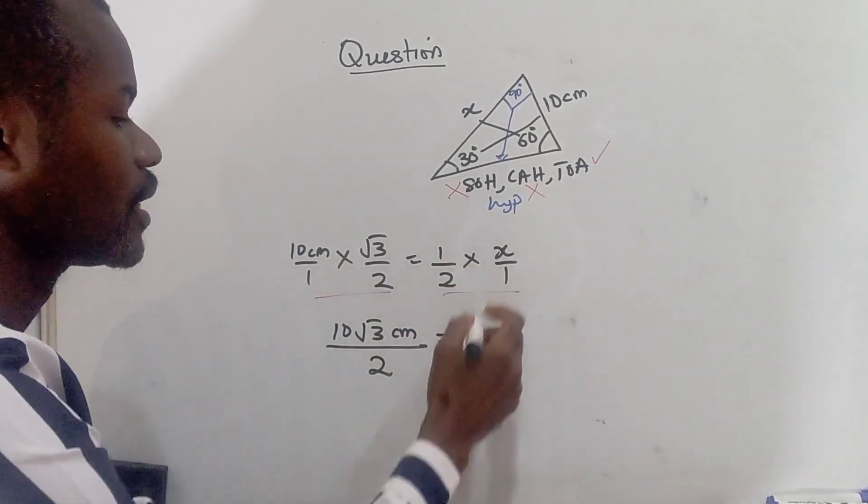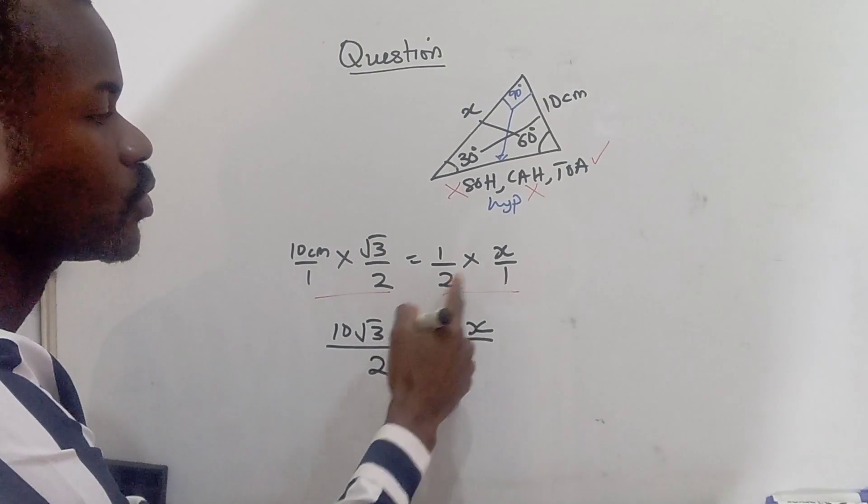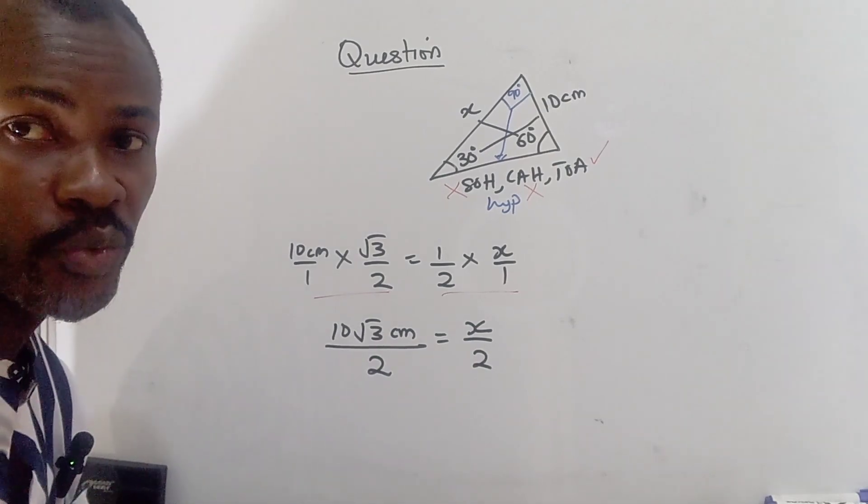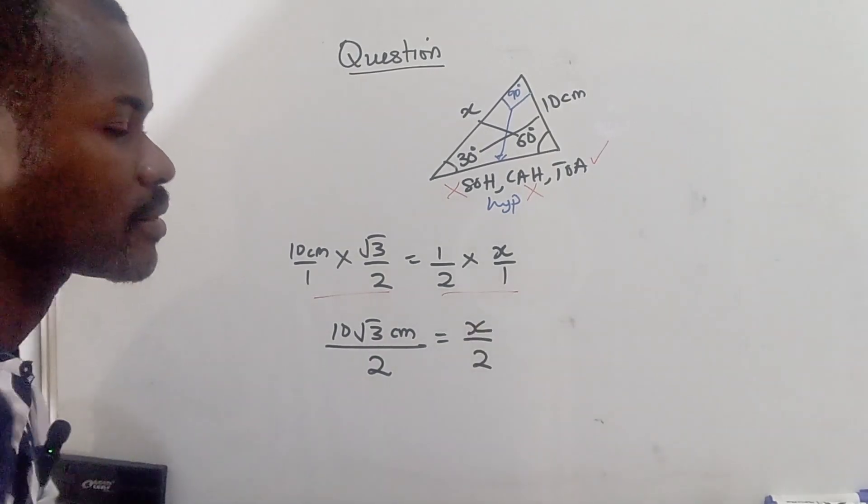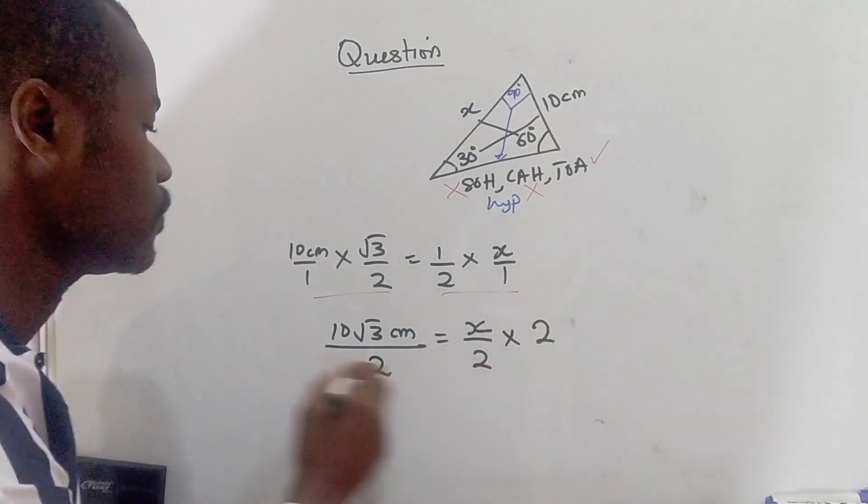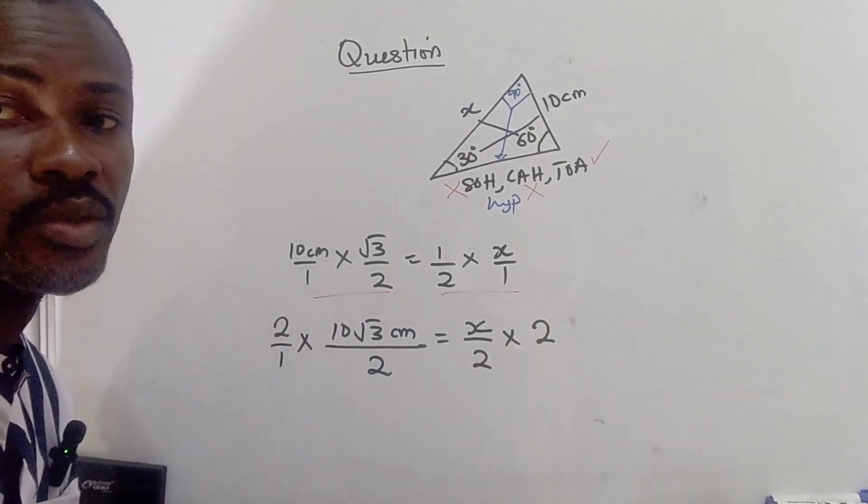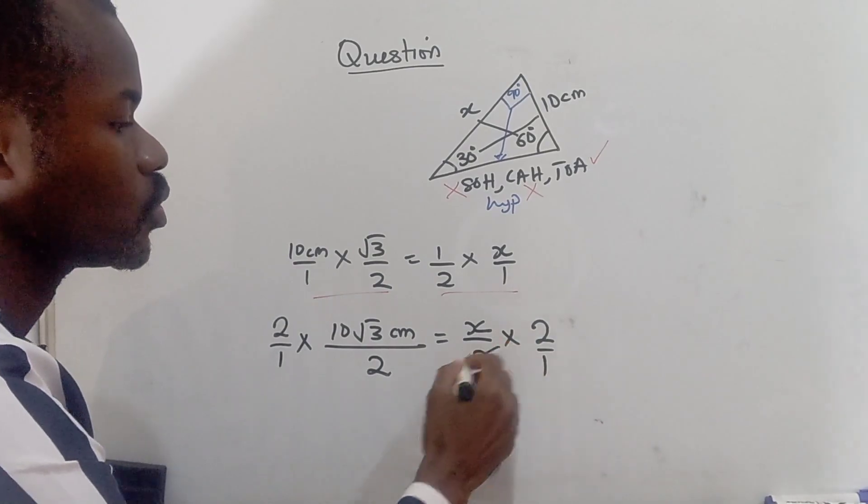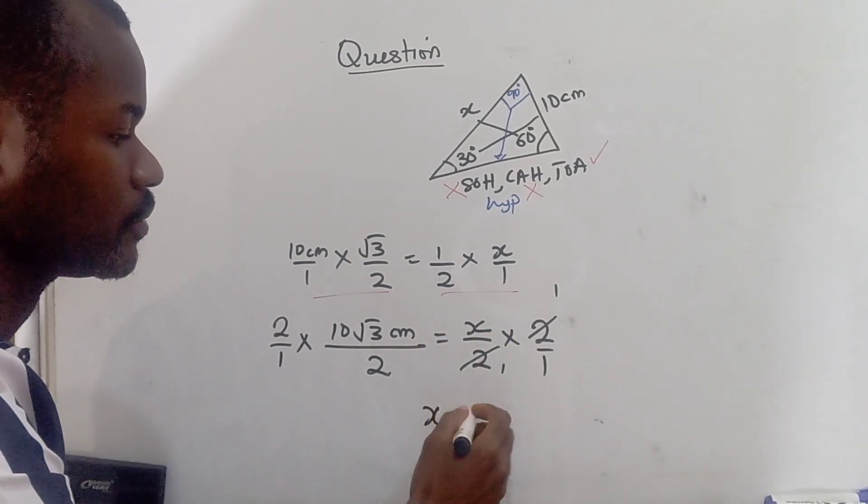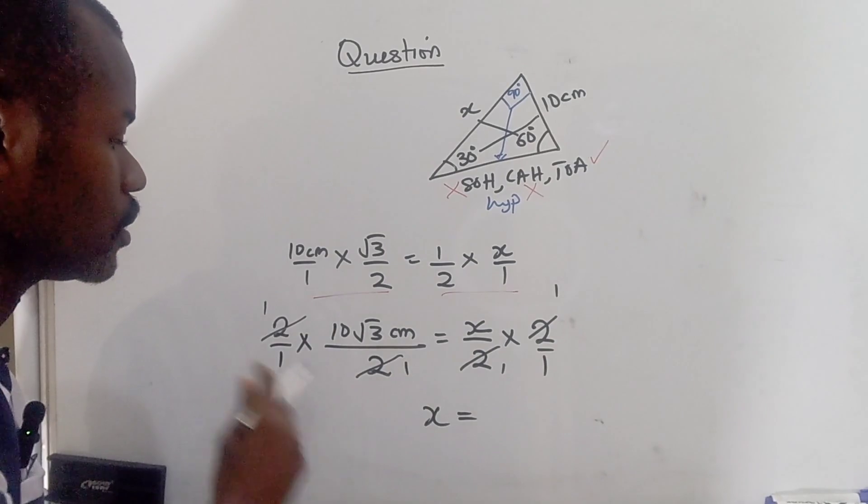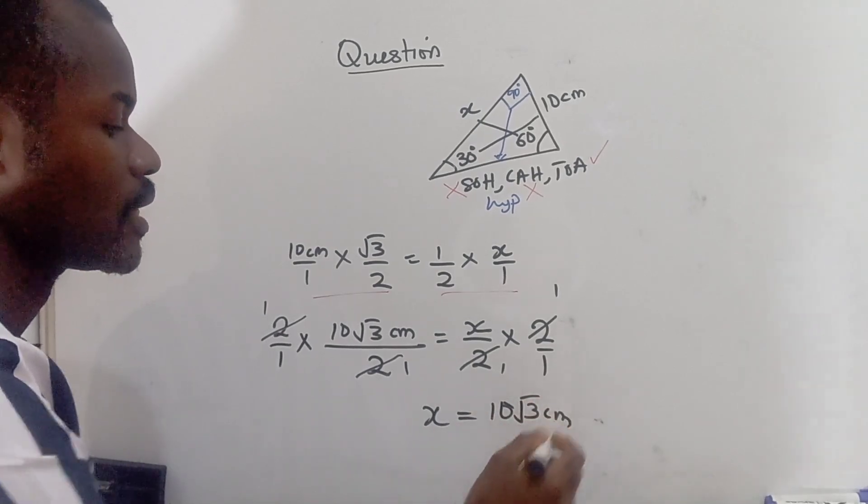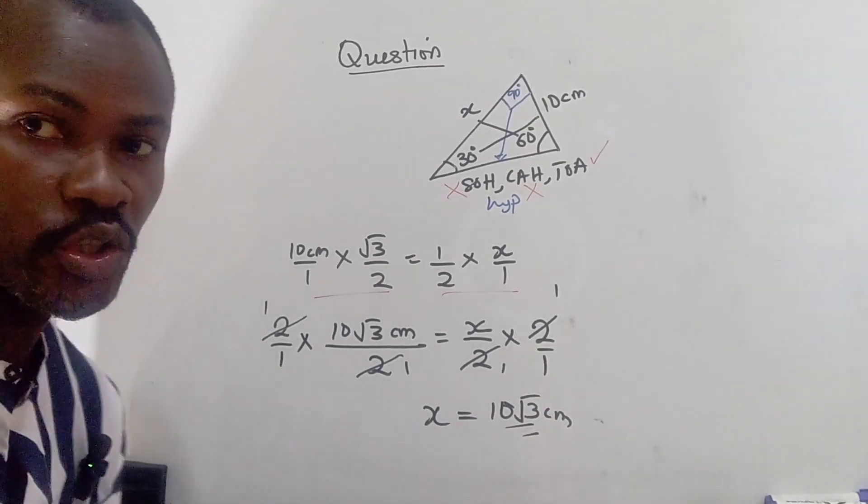So I have that, this multiply this, and this multiply, 10 times this will give us 10 root 3 centimeter all over 1 times 2 is 2, which is 1 times x is x. And 2 times 1 is 2. So from this point, what do we do to be able to get x? We have to eliminate the denominator, which is 2. So I'm going to multiply it by 2. And I'm also going to multiply it by 2. So 2 is going to cancel out 2 is 1. So we are left with x here. 2 is going to cancel out 2 is 1. So 1 times 10 root 3 centimeter gives us the solution to this point.